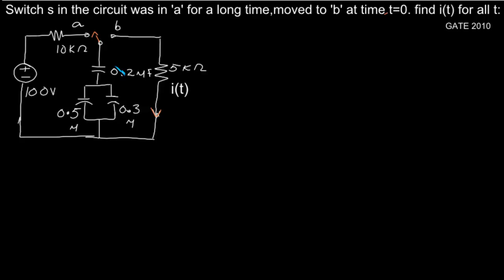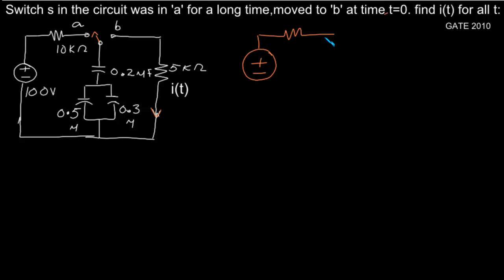We can simplify the circuit a bit further because we have two capacitors in parallel, and that in series with a 0.2 microfarad capacitance. We have 0.5 microfarad and 0.3 microfarad capacitance in parallel. So the effective circuit we can draw here — we have the source and the 10K resistor.